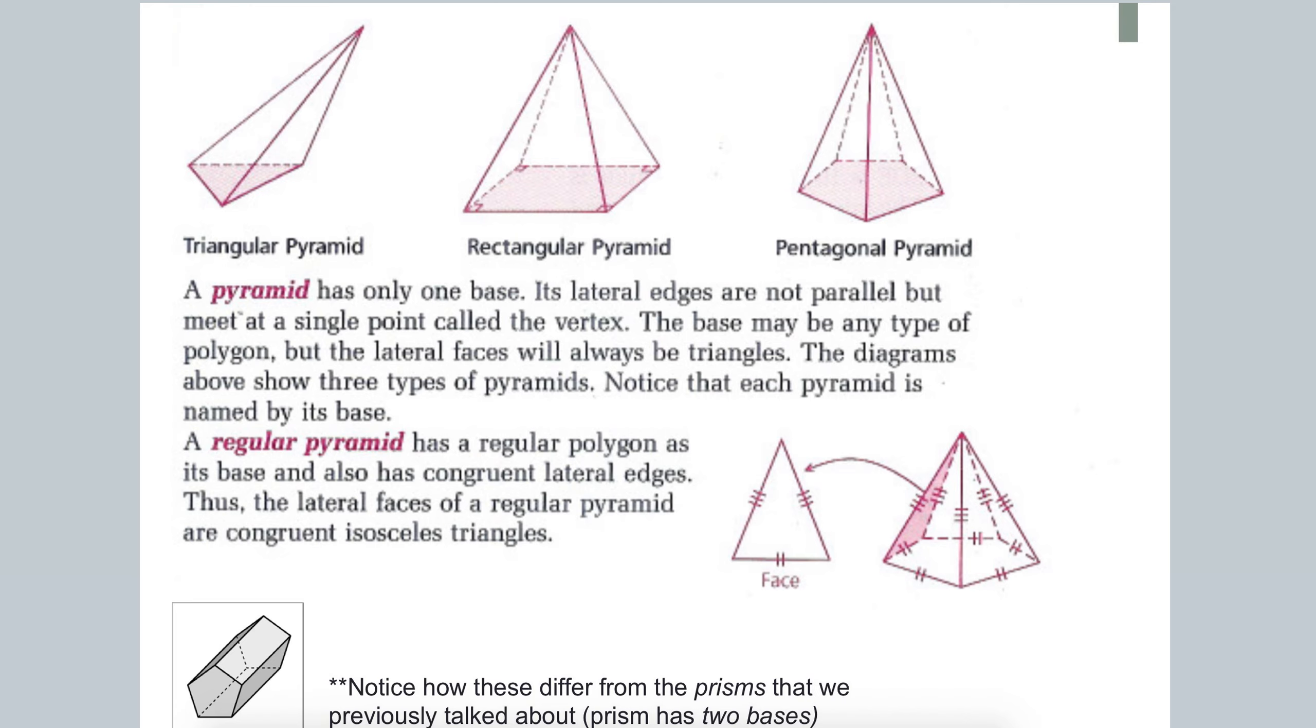Hello everyone, hope all is well. So today we're going to talk about pyramids. How pyramids differ from prisms is that pyramids have just one base. So for example, these three pyramids, if you notice, only have one base.